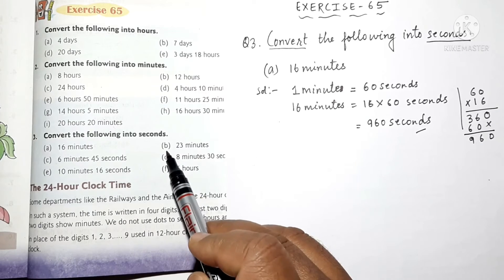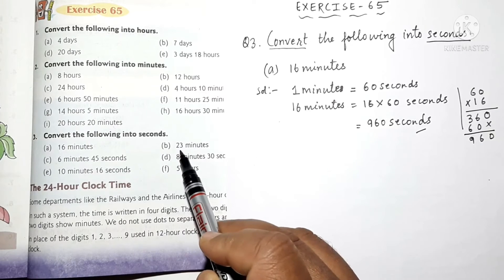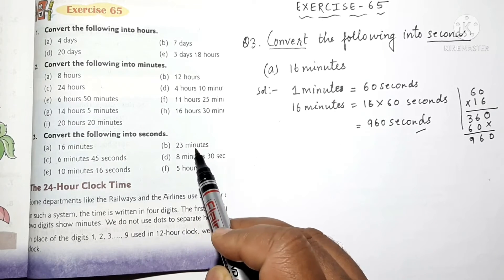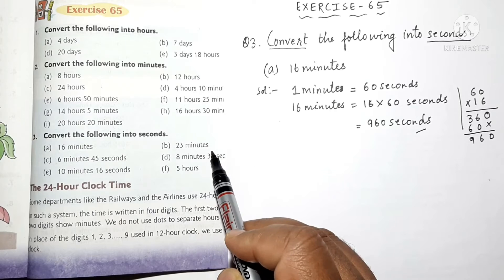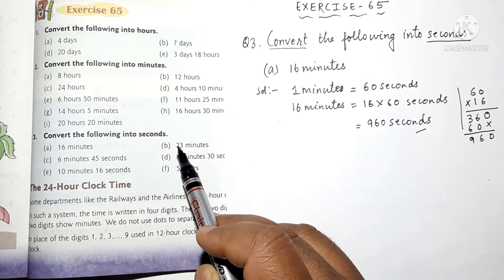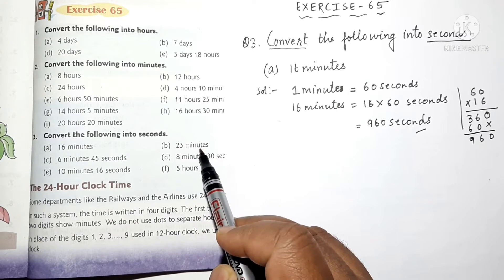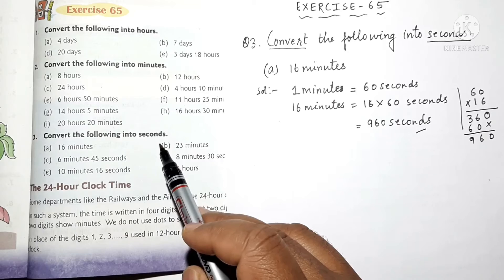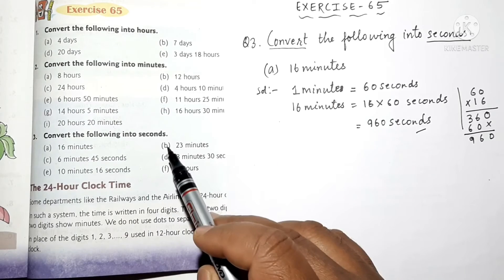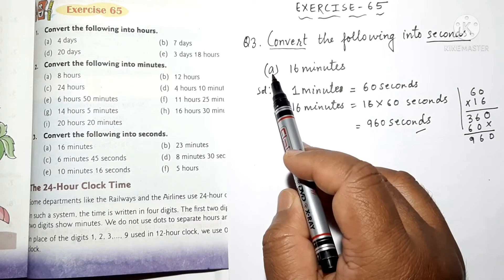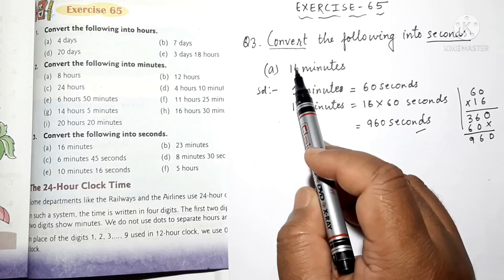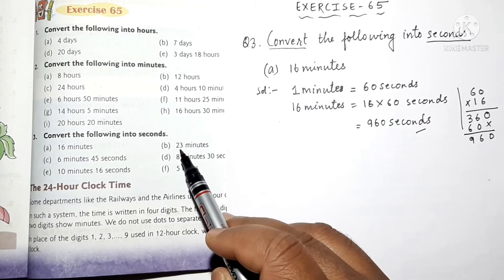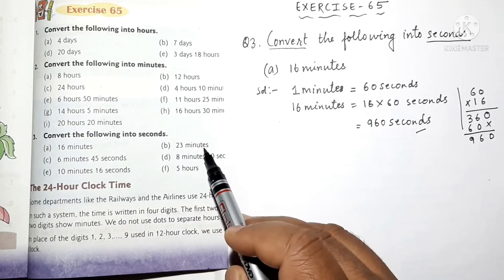Now, Question B: you have 23 minutes, so you have to convert 23 minutes into seconds. You can do Question B similar to Question A — in place of 16, you have to write 23 minutes.